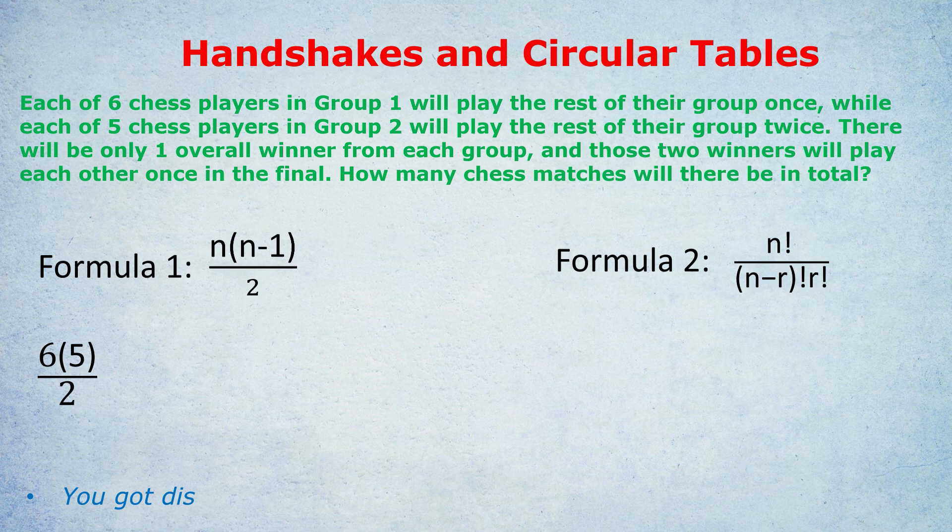It doesn't change the situation just because we're doing the thing once, twice, three times, whatever. It's the same formula, either formula one or formula two, it gives you the same result. It's still having engagements involving two people. Using either formula, you get the answer 10 for playing chess once, but they're going to play the rest of their group twice, so we double that. That's 20.